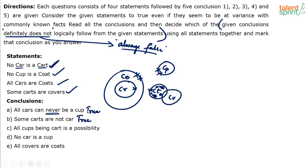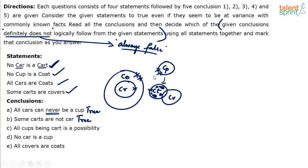Both previous conclusions are definitely true. Next: 'All cups being car is a possibility.' All the cups can go inside cars — cups should not touch coats, but double cross can overlap with single cross. All the cups can in fact be drawn inside cars without violating any of the statements. So 'all cups being car' is possible.